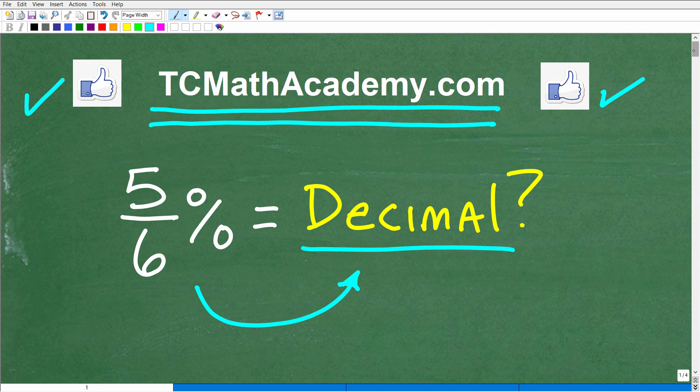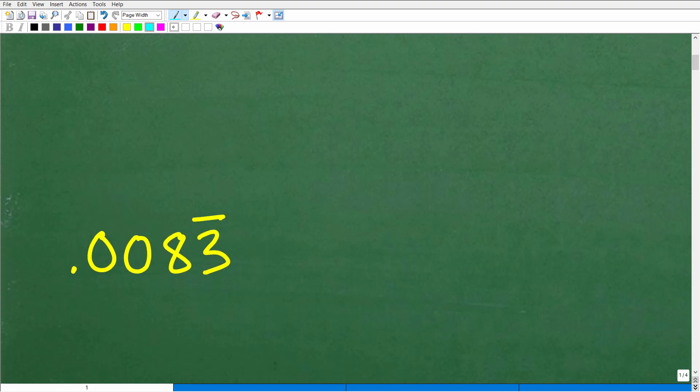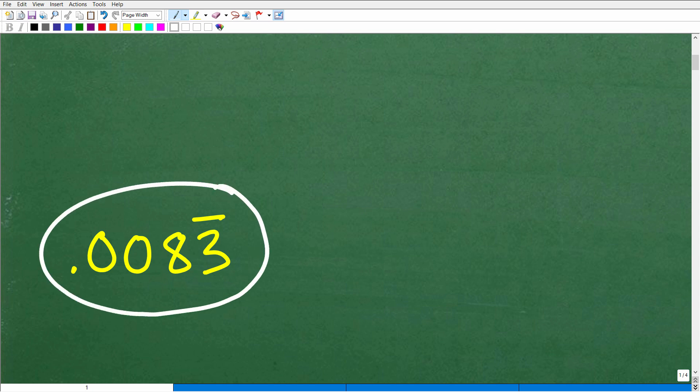But let's take a look at the answer. So 5-6% as a decimal is the following. Okay, so 0.0083 repeating. Now, if you don't know what this means right here, I'll fully explain this. But this is the answer.